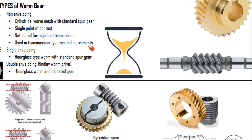You might have seen this kind of non-enveloping type worm gear on a guitar for tightening strings. To tighten the string, there is a system of a non-enveloping type worm gear. Followed by that, we have two different categories: the single-enveloping type and the double-enveloping type.